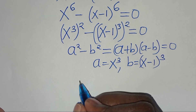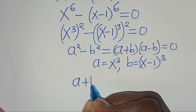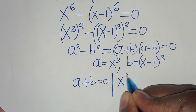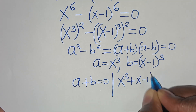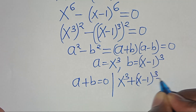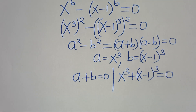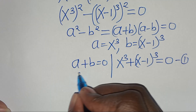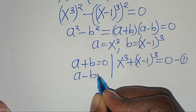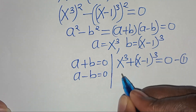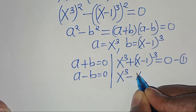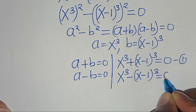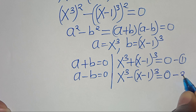So this implies that a plus b equal to 0, this is the same thing as x to the power of 3 plus x minus 1 to the power of 3, this is equal to 0. Let's call this equation 1. Then we have that a subtract b equal to 0, this is the same thing as x to the power of 3 subtract x minus 1 to the power of 3, this is equal to 0. Let's call this equation 2.